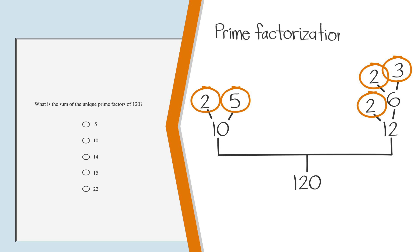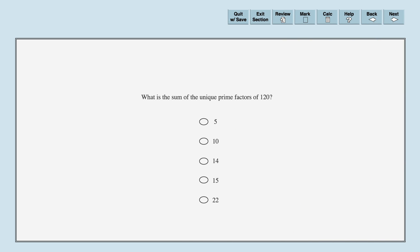Or are we? The prime factorization of 120 is 2 times 2 times 2 times 3 times 5. However, the question asks us to find the sum of the unique prime factors. So we should only count 2 once. 2 plus 3 plus 5, which equals 10. Looking at the answer choices, we can choose 10 as the correct option.